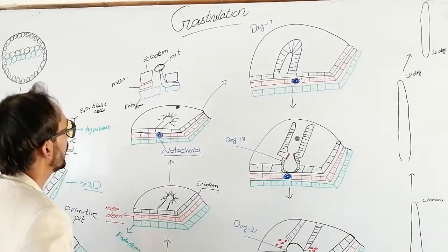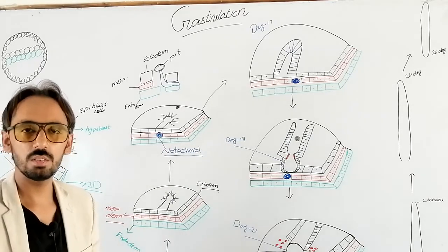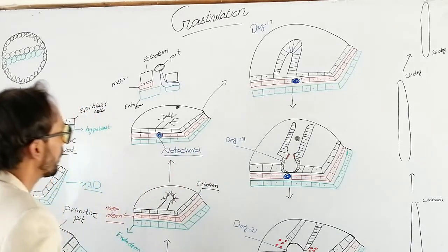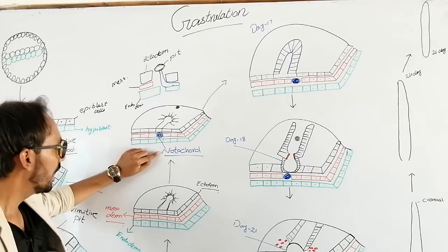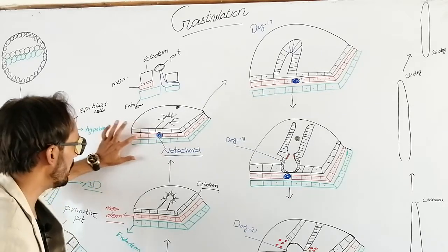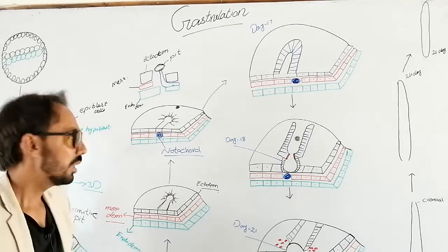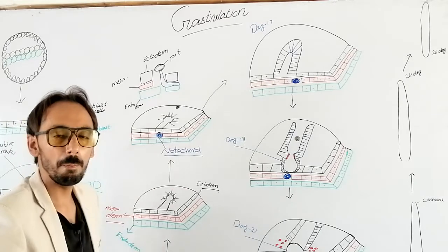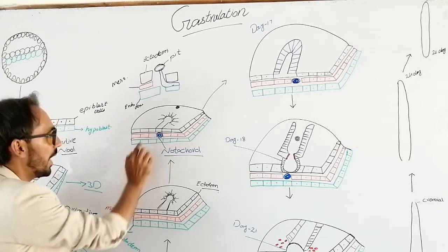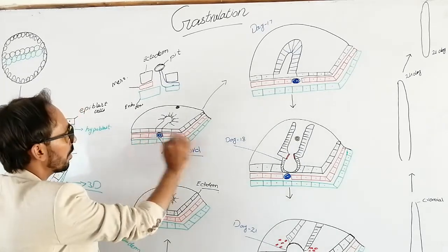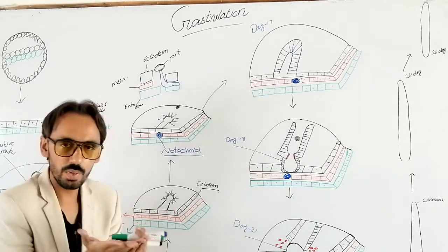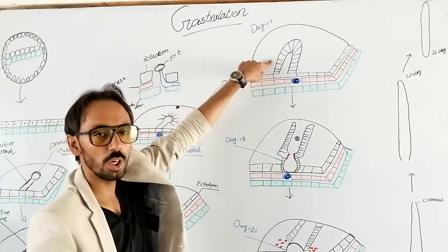Now, this notochord will release many growth factors. This notochord and the dorsal mesoderm will urge the ectodermal cells to make a thickening — a flat surface. And that flat surface is called the neural plate.